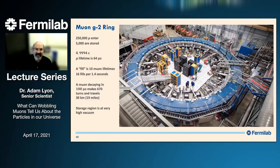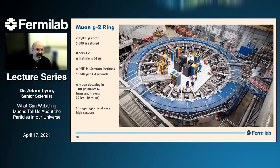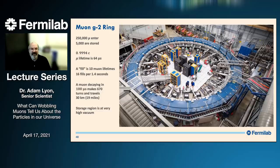Out of a trillion protons that strike the target, about 250,000 muons make it to just before the G-minus-two ring building. Here is the G-minus-two ring — it's the same Brookhaven magnet, but everything inside is new. About 250,000 muons enter the ring, but only about 2% make it through the torturous route to get stored, so we actually store about 5,000 muons at a time. These muons are going really, really fast — 0.9994 times the speed of light. Because of special relativity, time dilation means a muon that at rest would live for 2.2 microseconds on average actually lives for 64 microseconds in our ring, which is great because the muons live long enough to go around lots of times.